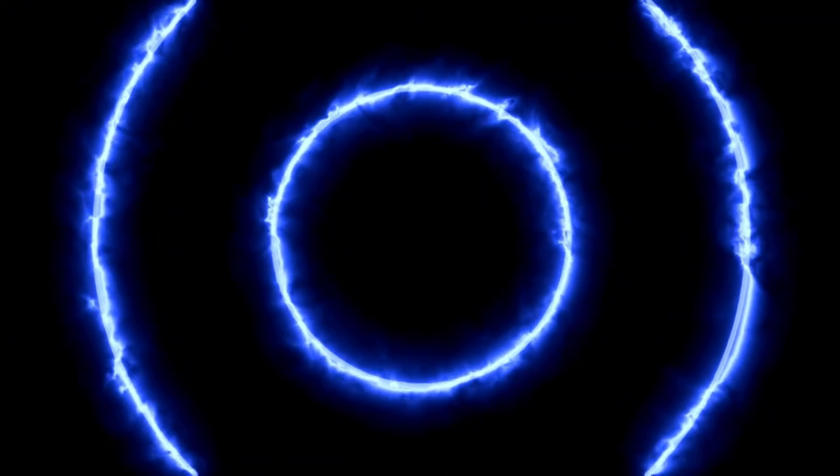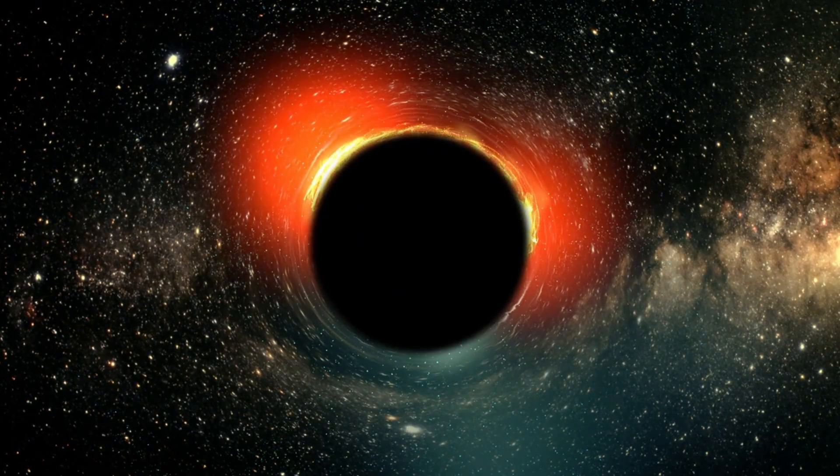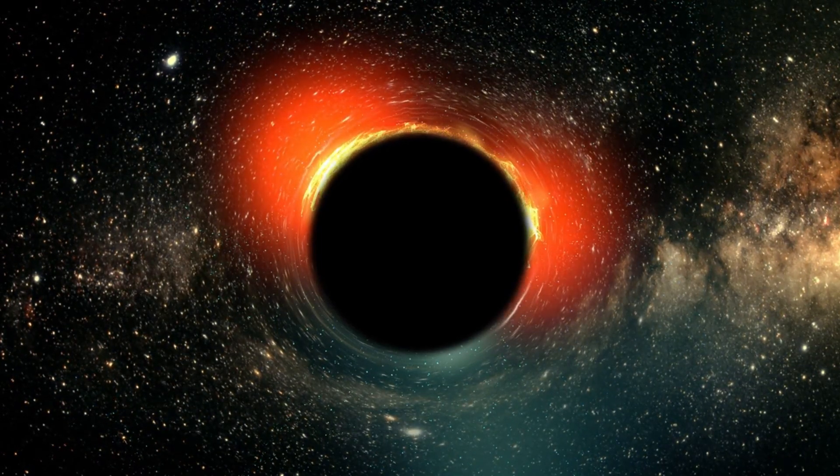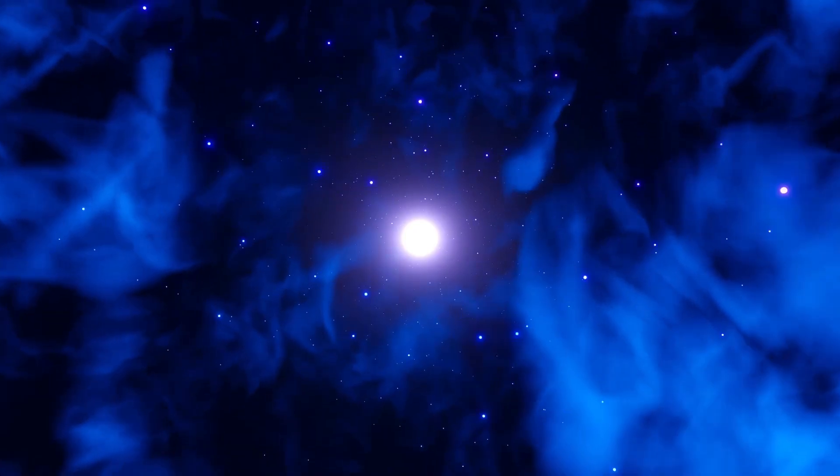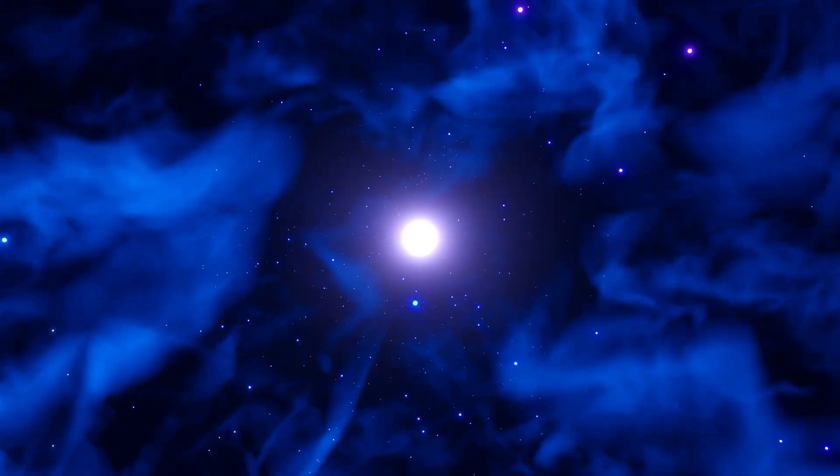However, black holes may not just be created by collapsing stars. In 1963, New Zealand mathematician Roy Kerr used Einstein's equations to describe the dynamics of a rotating black hole. Kerr's solution showed that rather than collapsing into a point, a rotating black hole would form a thin disk, a phenomenon known as the ergosphere.